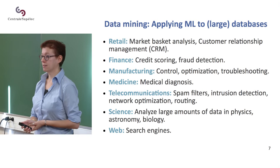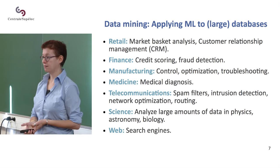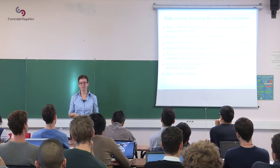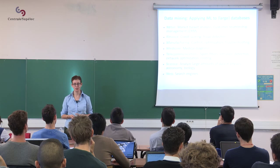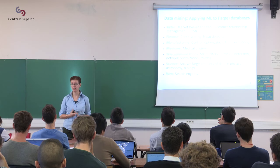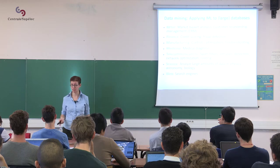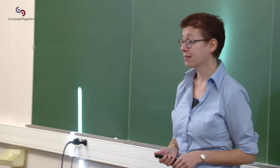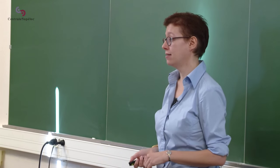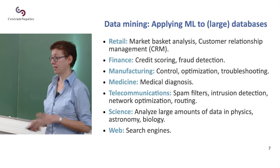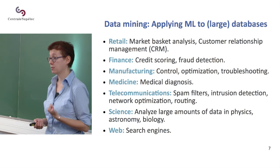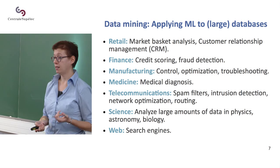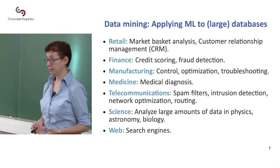Machine learning is used in physics — I don't really understand what they do at CERN, but they use a lot of it. Of course, it's widely used on the web for search engines — that's how Google makes suggestions. It's also central to social networking: how LinkedIn, Twitter, and Facebook make suggestions about content you might be interested in and people you might want to connect with.